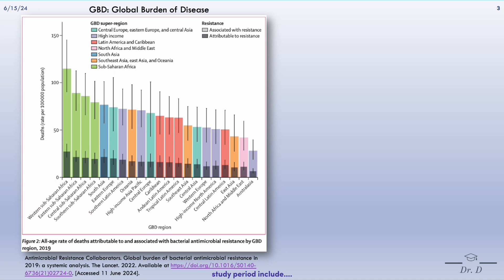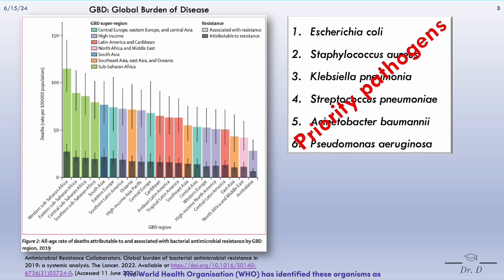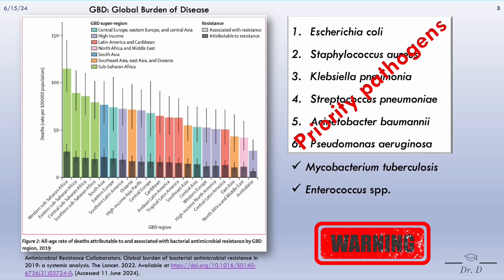The six pathogens associated with the most deaths during the study period include Escherichia coli, Staphylococcus aureus, Klebsiella pneumoniae, Streptococcus pneumoniae, Acinetobacter baumannii, and Pseudomonas aeruginosa. The WHO has identified these organisms as priority pathogens. Other pathogens associated with AMR include Mycobacterium tuberculosis, Enterococcus, and Enterobacter species.